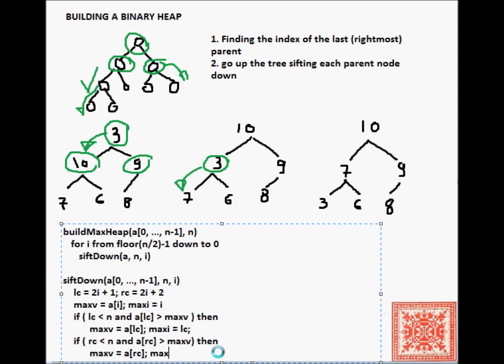And then we'll do the same. We'll check the right child and do the same if it happens to be greater than the current value of maxv.